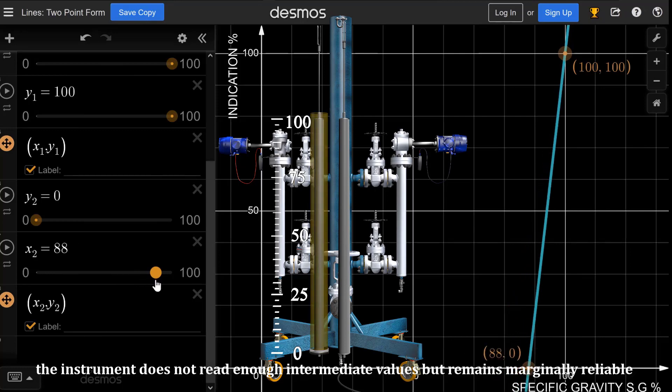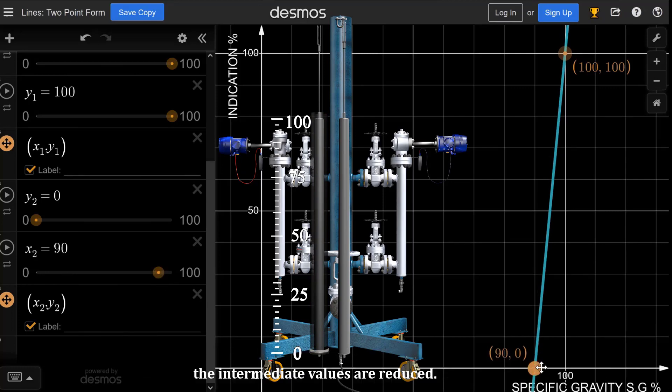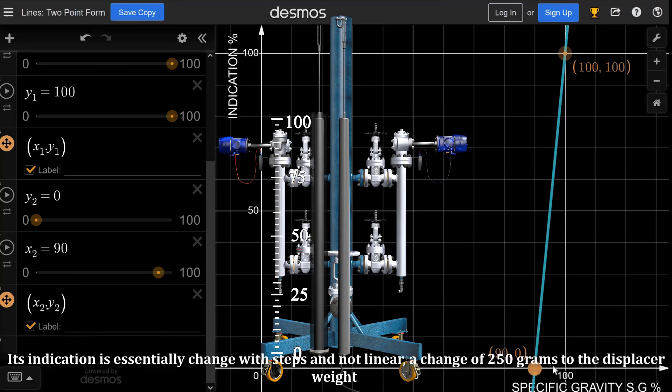The instrument does not read enough intermediate values but remains marginally reliable, and this is the case in both types of instruments: differential pressure and displacer type. As we reduce the span, the intermediate values are reduced. Its indication is essentially changing with steps and not linear.